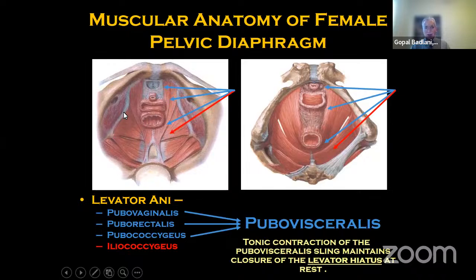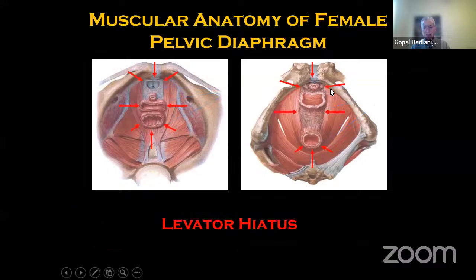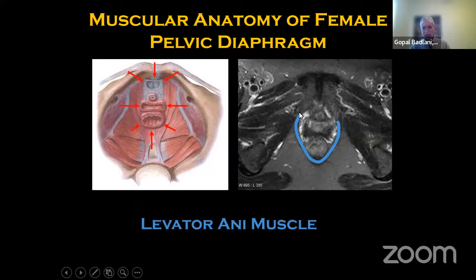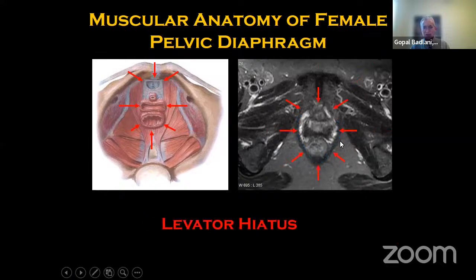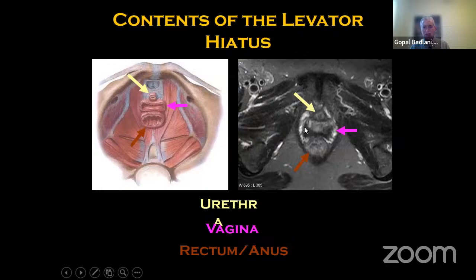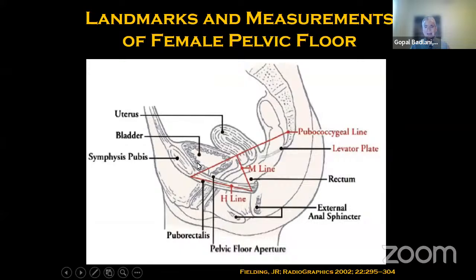The levator hiatus is this hiatus you can see on an MRI — if it's detached from the arcus tendineus on one side, you see a tear that allows detachment or lack of support of the levator group, which you can identify on MRI. This cadaver dissection shows the levator hiatus — it can get very wide so that everything falls through. What you have is the three aspects — the urethra, the vagina, and the rectum going through this hiatus. The angles are very important.